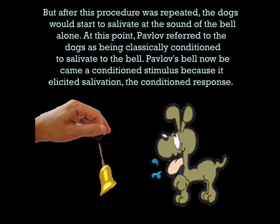But after this procedure was repeated, the dogs would start to salivate at the sound of the bell alone. At this point, Pavlov referred to the dogs as being classically conditioned to salivate to the bell. Pavlov's bell now became a conditioned stimulus because it elicited salivation — the conditioned response.